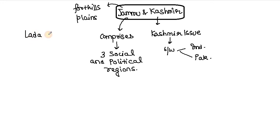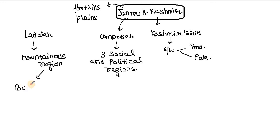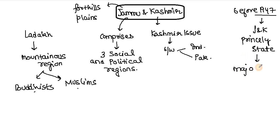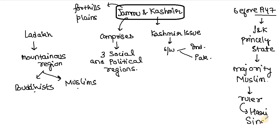If we look at Ladakh, it is a mountainous region with very little population, and it is equally divided between Buddhists and Muslims. Before 1947, Jammu and Kashmir was not a state — it was a princely state, meaning there was a prince ruling it. The state had a majority Muslim population, but the ruler was a Hindu — Raja Hari Singh.